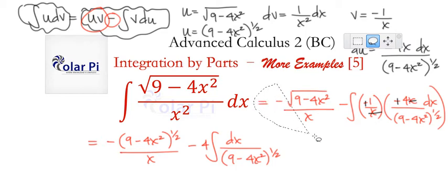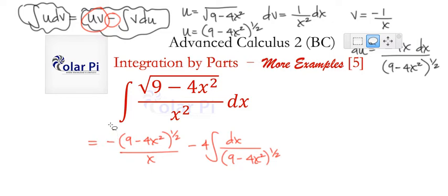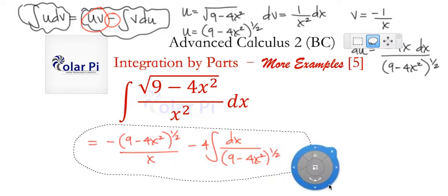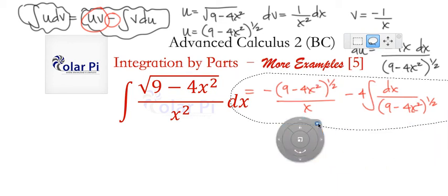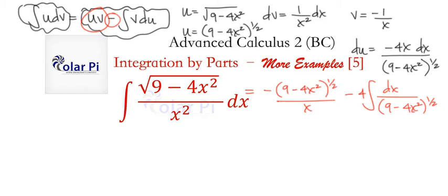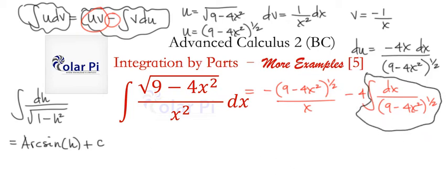Now we are almost at the finish line, and the only thing left to do is finish that integral at the end, and we're good. But wait, isn't it true that the integral of dh divided by square root of 1 minus h squared equals arcsin of h plus c? That is. So that's how we're going to be able to figure out this integral.